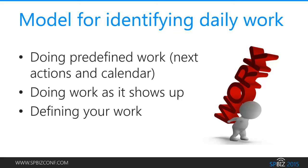The last thing before we move on to the solution: ways of identifying your daily work. Your calendar contains things you must get done that day, and your next action list gives you options to choose from — these are your predefined work. But what about things that just show up throughout the day that suddenly become urgent? That's precisely why you shouldn't put too much on your calendar, because things you'd like to get done but that aren't imperative will get bumped, causing stress. The third way is to constantly define your work — clearing your in-tray and digital messages and breaking projects into actionable steps as time permits.